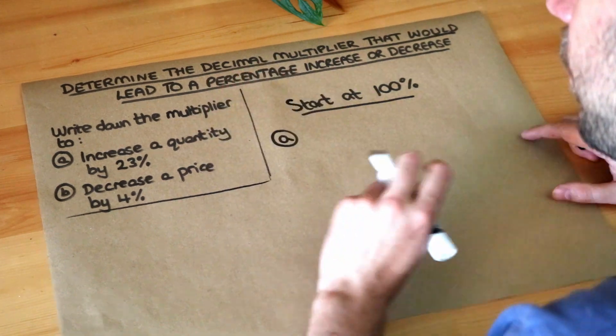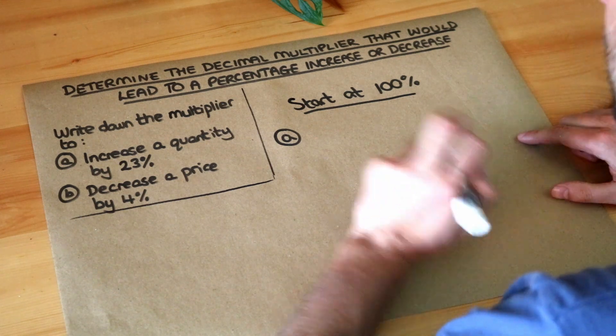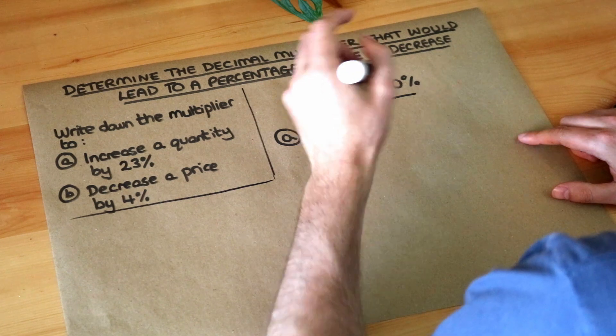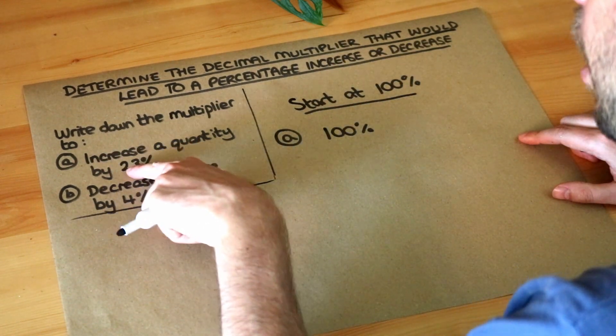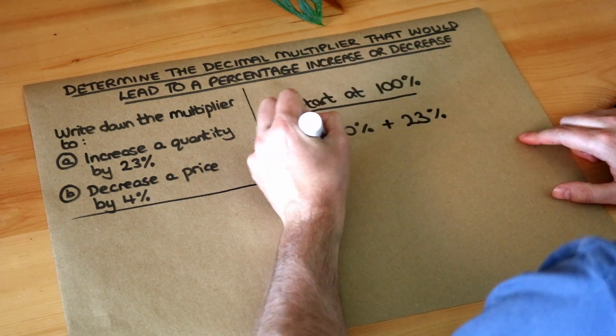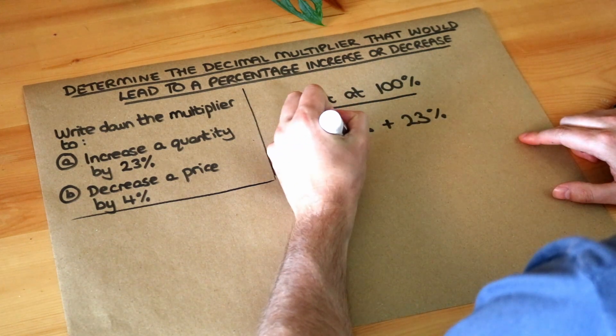So if we look at part A, we want to increase a quantity by 23%. So it starts 100% of its value, all of its value, and we're increasing it, that means going up by 23%. So we're adding 23%. Now what's 100 plus 23? Well it's just 123.